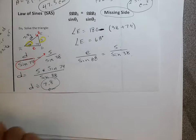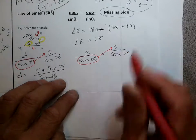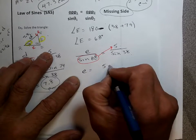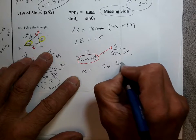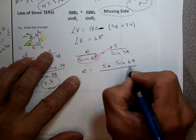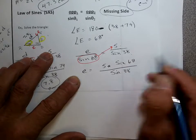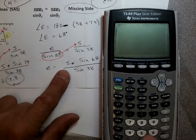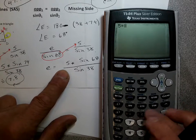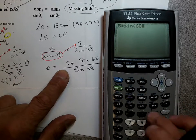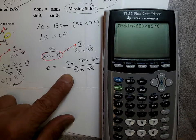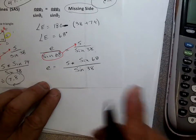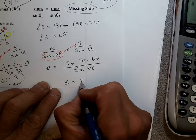I'm just going to multiply the sine of 38 up here, so: little e equals 5 times the sine of 68 over the sine of 38. Using the calculator: 5 times sine of 68, close the parentheses, divided by sine of 38, close the parentheses — and I get about 7.5. So little e is about 7.5.